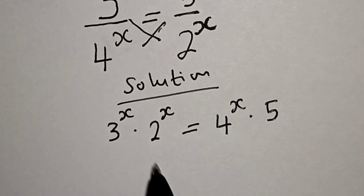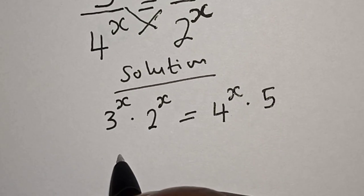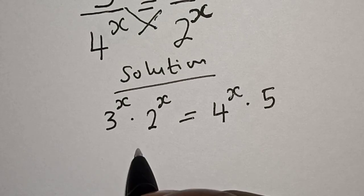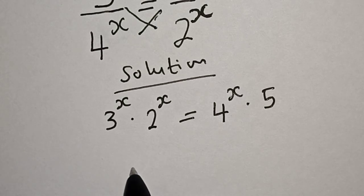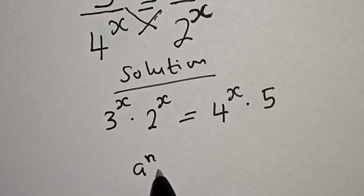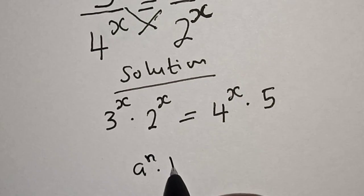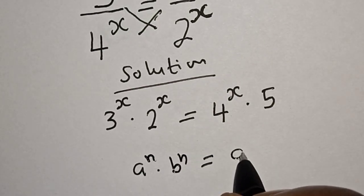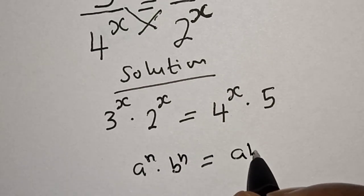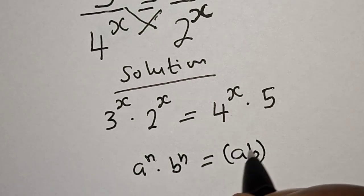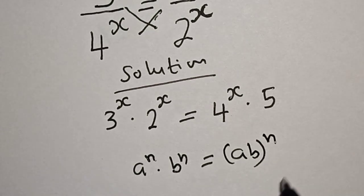This gives us 6. Remember this rule: if you have a raised to power n multiplied by b raised to power n, this is equal to a·b raised to power n.